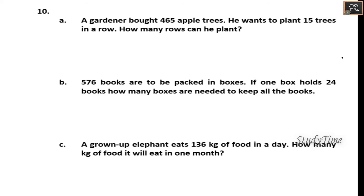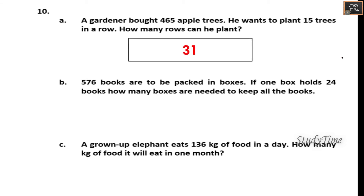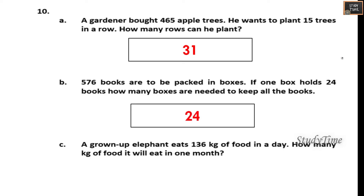A gardener bought 465 apple trees and wants to plant 15 trees in a row. How many rows can he plant? The answer is 31. Next, 576 books are to be packed in boxes. If one box holds 24 books, how many boxes are needed? 576 divided by 24 — the answer is 24 boxes.